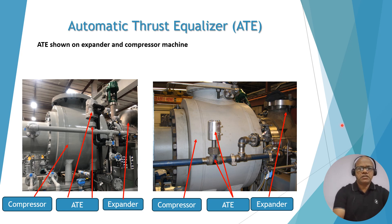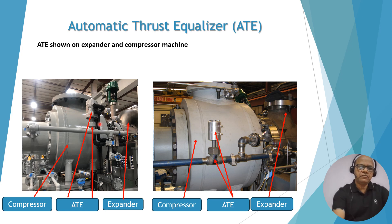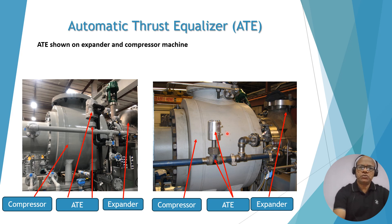This is a photograph of the ATE installed on the expander-compressor arrangement. This is the compressor side, showing the compressor ATE and the AT piston-cylinder arrangement connected to the valve. This is the expander side. In another picture you can see the ATE port which is connected to the bearing thrust pressure — this is the top side, this is the bottom side, and similarly the expander and compressor sides are labeled.